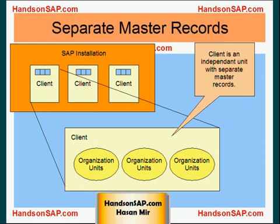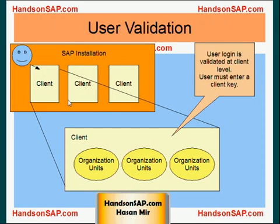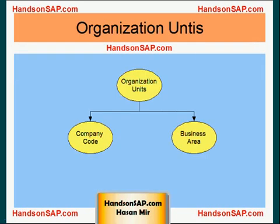Each client maintains its own master record in the database, and it also maintains its own sets of tables. So data is really segregated at the client level. When a user logs into the system, the login is validated at the client level as well — the user must have an entry in the master data at that client. Now, organization units are basically two types: company code and business area. This is how your company code fits into the picture.